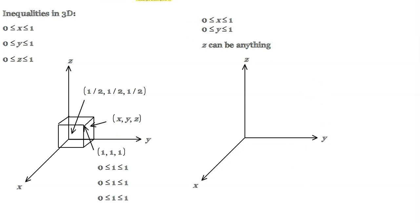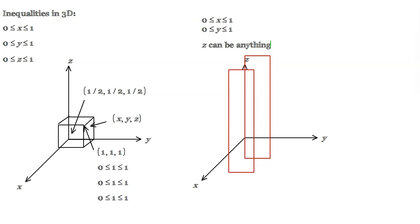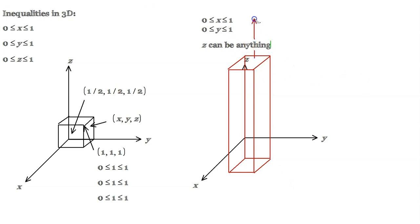In that case, basically draw what looks like the face of a three-dimensional object passing through x equals 1. Let me make this red so it stands out a bit better. This is one face right in the back there, and another face roughly here. Now because z is anything, connect these this way — like this, and this, and this, and this. Because z is anything with no restriction, this rectangular prism essentially would continue forever going in the vertical dimension and continue forever going down. It would never stop.